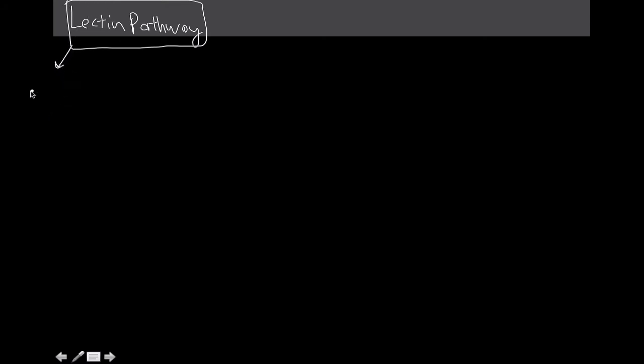So with the lectin pathway, what we have is mannose binding lectin, which as its name implies, we've talked about what this does. There's really two parts of it known as MASP1, on the left side of it, and then MASP2.